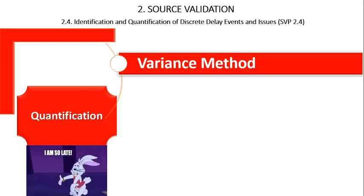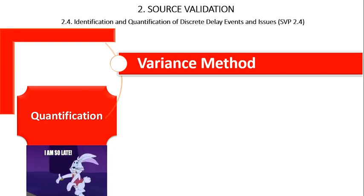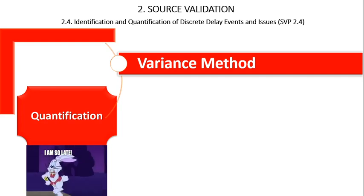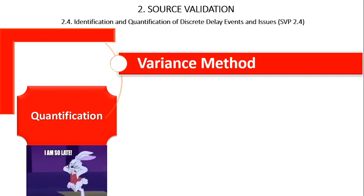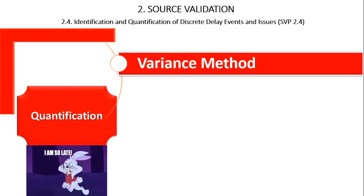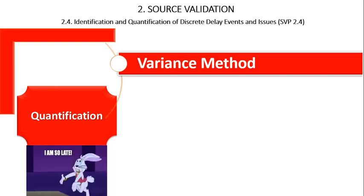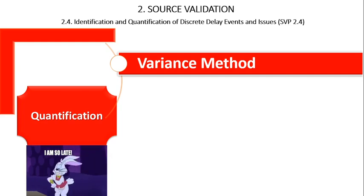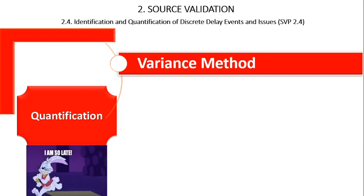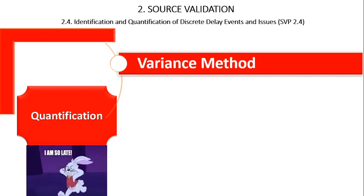The variance method is purely mathematical in nature. Two figures — a planned and an actual — are subtracted from each other to compute the variance. These two figures may be dates, durations, or productivity measurements. Thus, the entire variance needs to be tied to one or more causes for the variance.